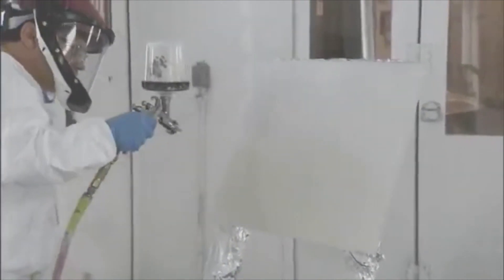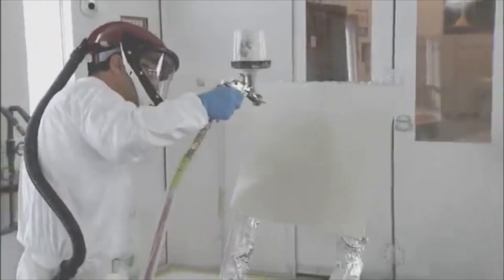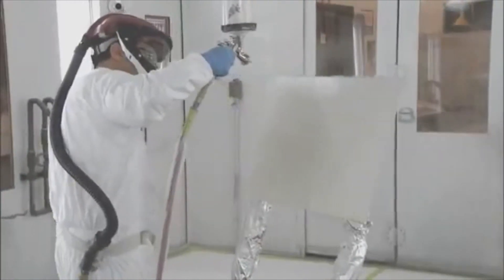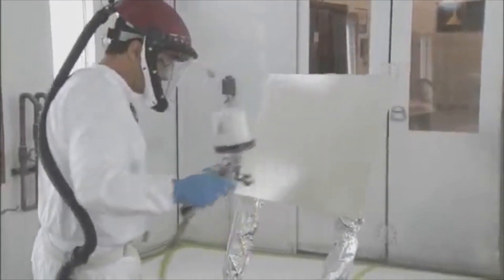Spray one and a half coats of properly mixed ground coat color over the entire letdown panel. Use the same techniques as when applying to the vehicle. Allow the letdown panel to dry.